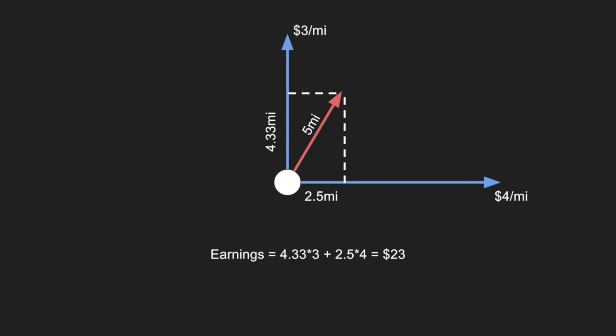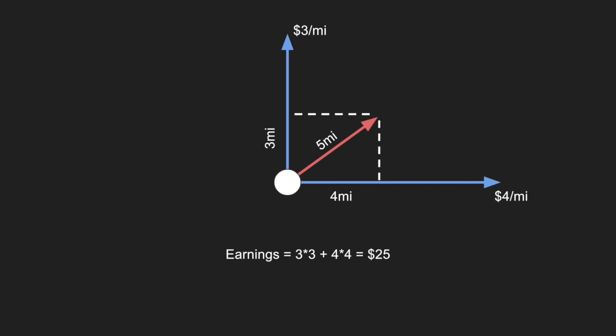We can ask what is the best possible direction to maximize the money we get. Actually the answer is we go five miles at such an angle that we go four miles east and three miles north. You can check that this satisfies the Pythagorean theorem: a triangle with sides three, four, and five is valid. So the maximum amount of money we would make is twenty-five dollars.